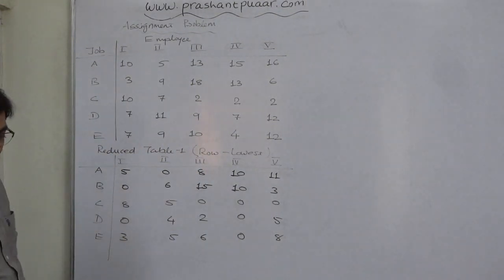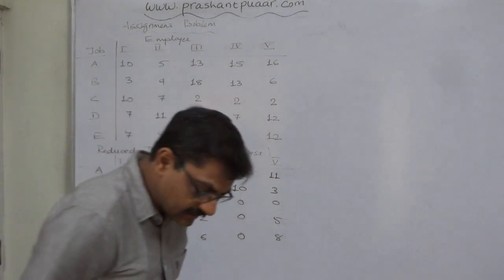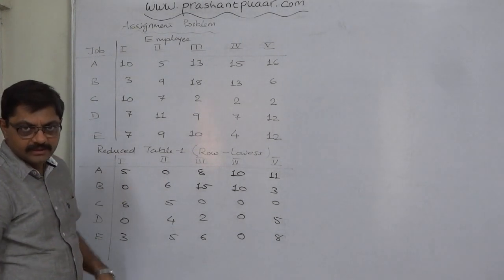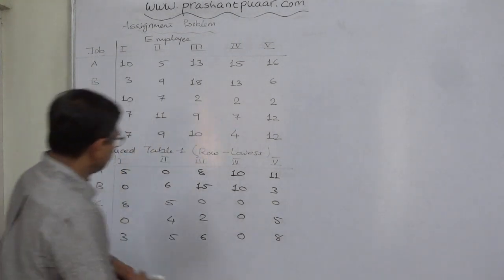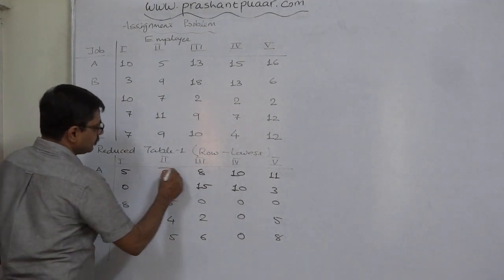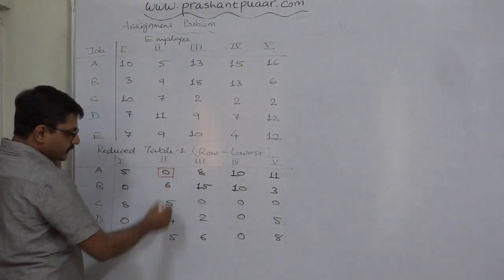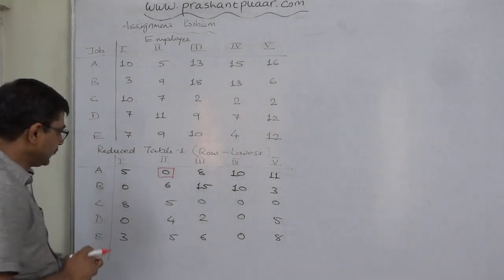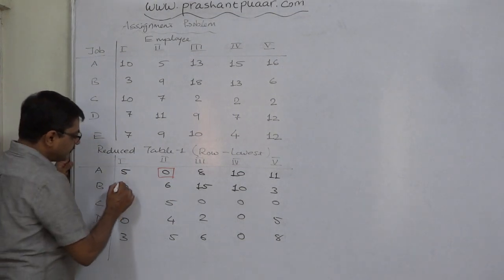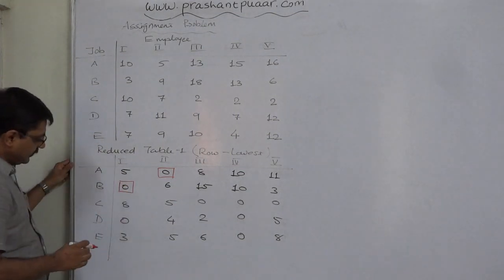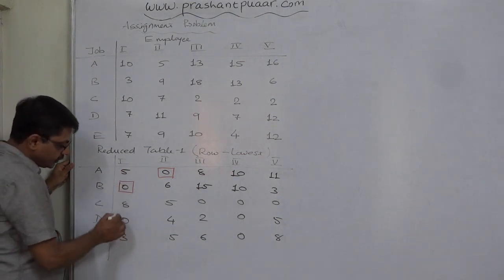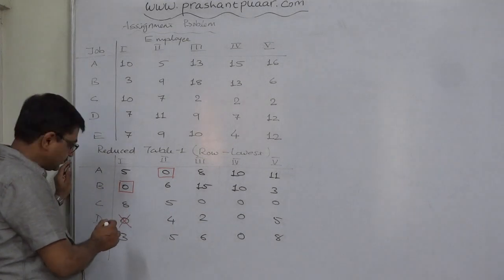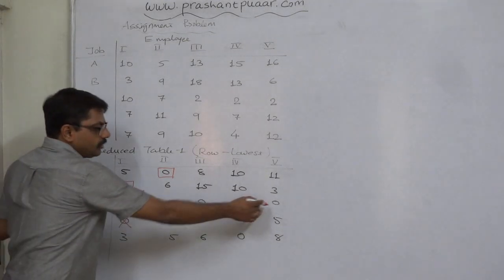We can make assignments in this table directly. The first step for making assignments is to find the row with a single zero and assign it. The first row has a single zero, so we make the assignment. If there is any other zero in the same column, we cancel it. In the second row there is also a single zero; we make the assignment and cancel any other zero in that column.